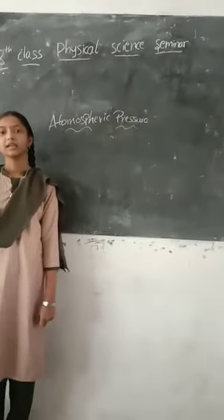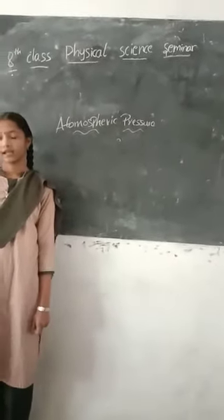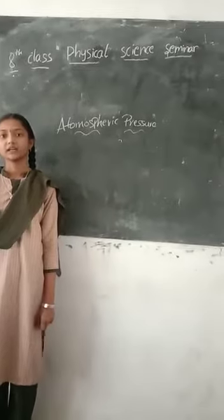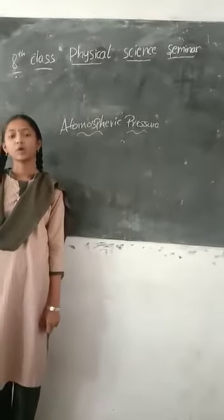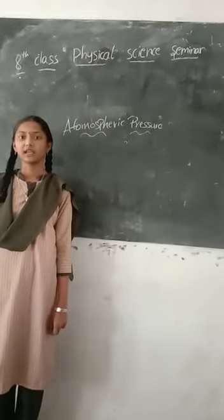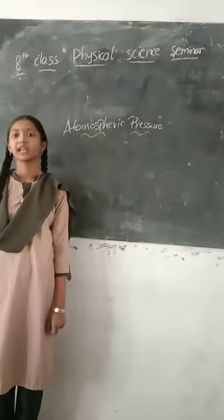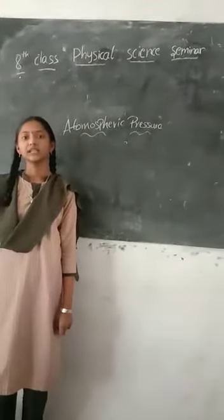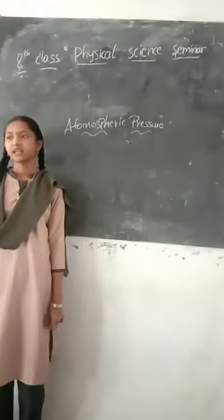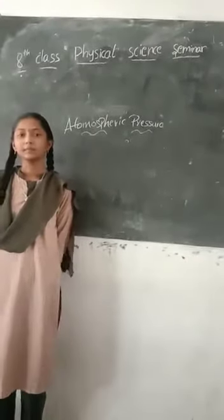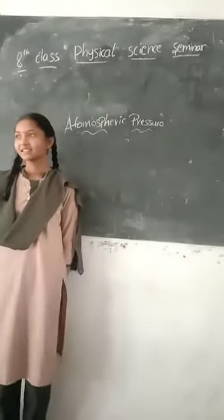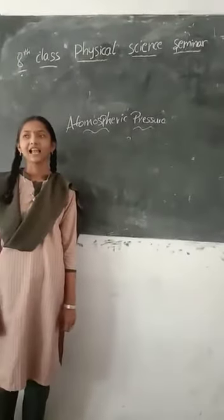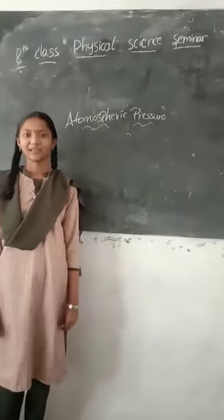We know that there can be air around us. This amount of air is known as atmospheric pressure. The atmospheric air extends to the moving object, and it has the atmospheric pressure.